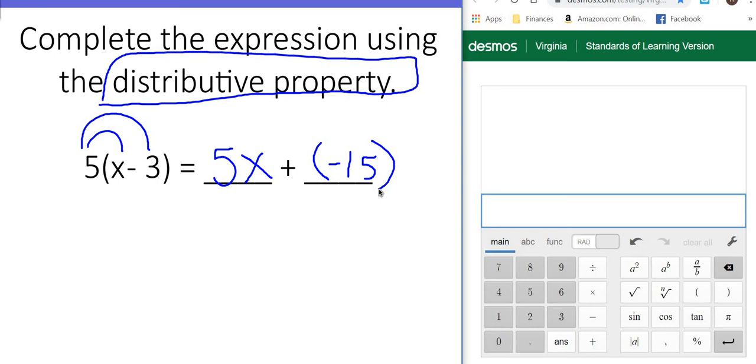So if there was no plus sign here, you could have just put minus 15. But since they did have that plus sign there, you had to go ahead and put the negative 15 in parentheses.